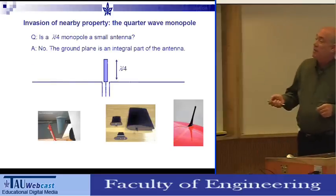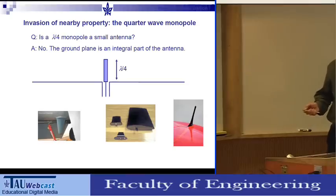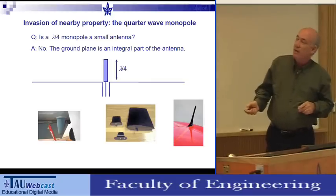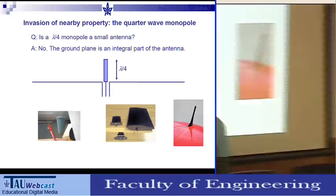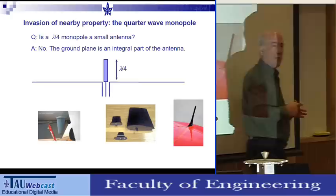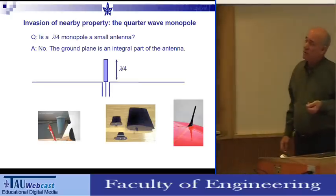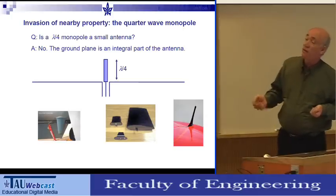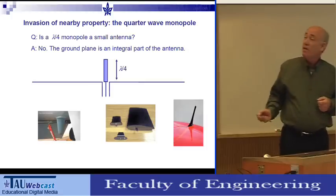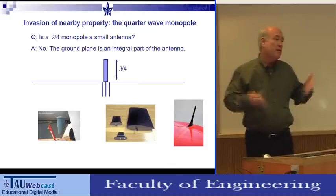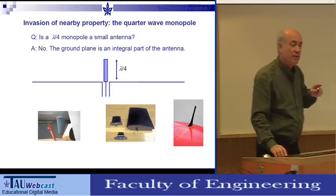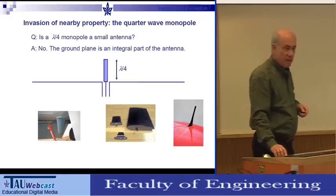One approach is invading property. Consider a monopole antenna on a car. Or a conical monopole on a ground plane — conical for very wideband operation, from 1 GHz to over 10 GHz. Is it a small antenna? It's only a quarter wavelength, but the answer is no — it's actually larger because the conical structure invades the surrounding area. The ground plane is excited with currents and is an inherent part of the antenna. If you chop off the ground plane, it won't radiate. A quarter-wave monopole is a larger antenna than a half-wave dipole.